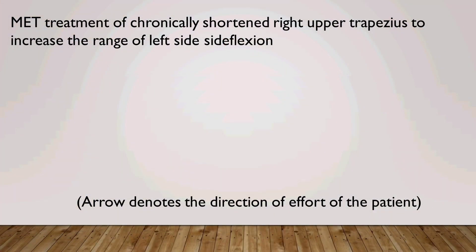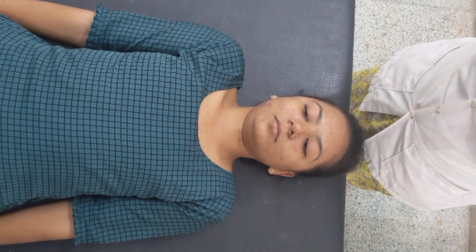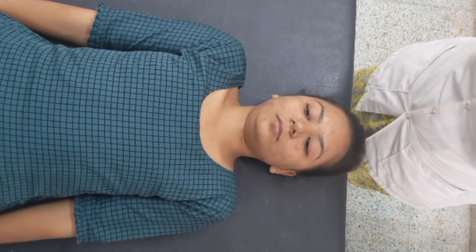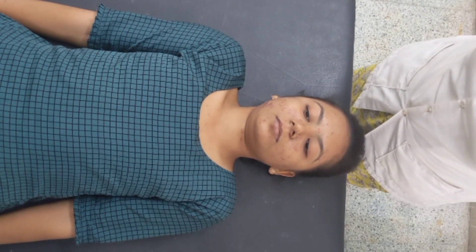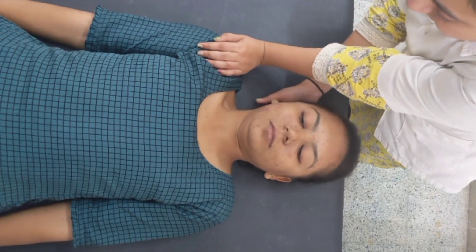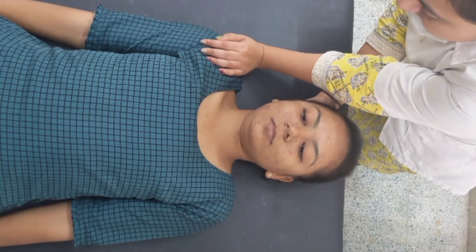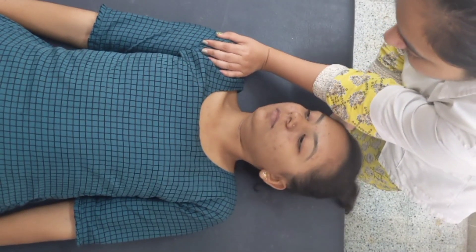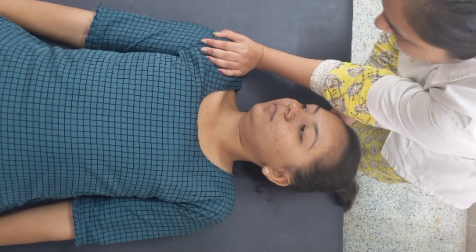MET treatment of chronically shortened right upper trapezius to increase the range of left side flexion. Patient position: supine lying, arms by the side. Therapist position: standing behind the head of the patient with closed hand — one hand stabilizes the shoulder and the second hand supports the cervical spine and atlanto-occipital area. Procedure: therapist passively side-bends and slightly rotates the head or neck away from the side being treated to the restriction barrier.